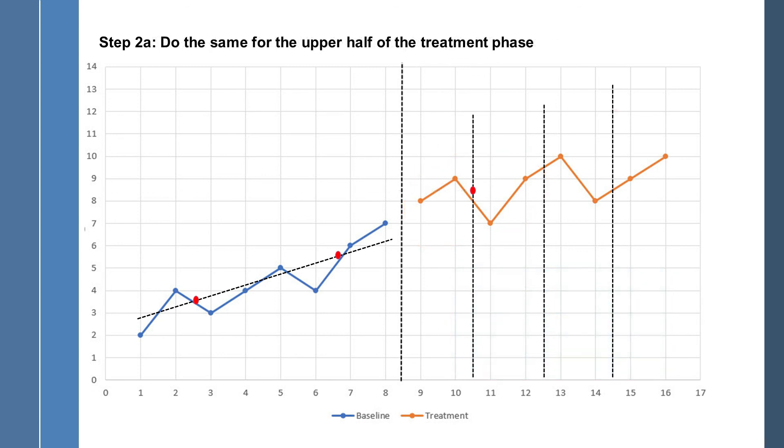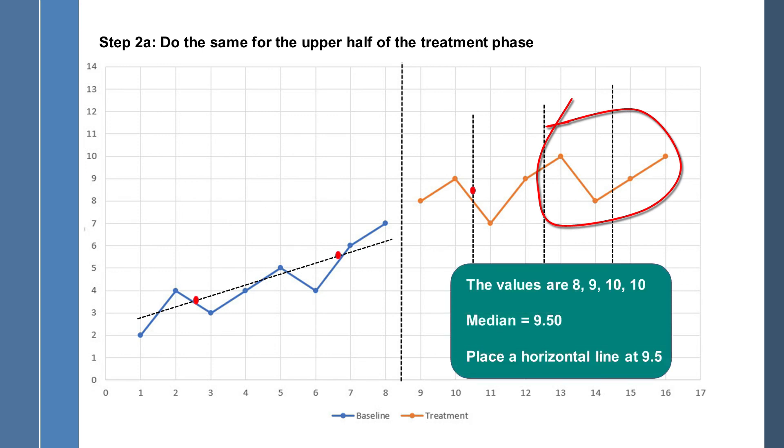We do the same thing for the top half of the scores for the treatment phase. The values here are 8, 9, 10, and 10. And the median of that set of four scores is 9.5. Place a horizontal line at 9.5. And then drop a dot on that.